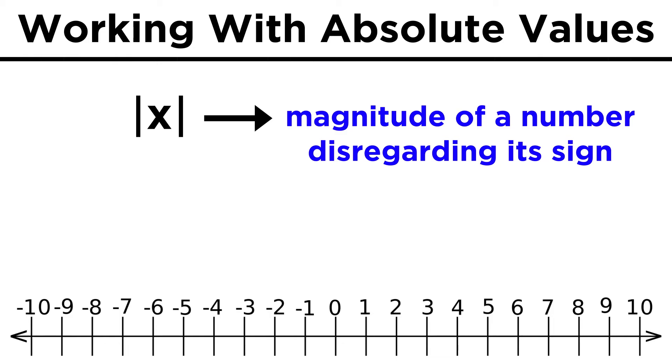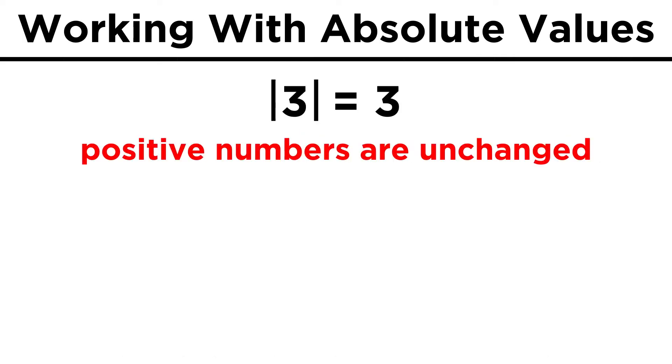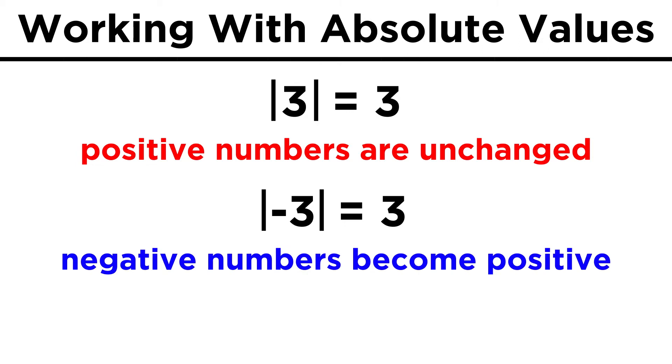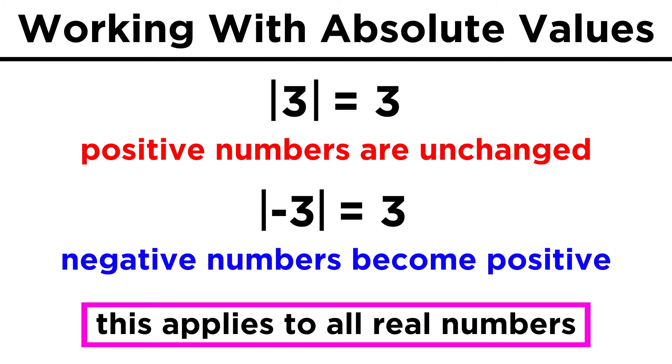That brings us to a more practical definition of absolute value as being the magnitude of a number disregarding its sign. Positive numbers are unchanged by taking the absolute value, while negative numbers simply drop the negative sign and become positive. This applies not just to integers, but all real numbers, whether rational or irrational.